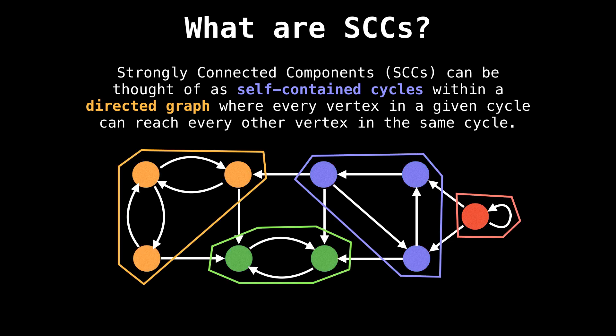I've outlined them here in different colors. If you inspect each strongly connected component, you'll notice that each has its own self-contained cycle, and that for each component, there's no way to find a path that leaves a component and comes back. Because of that property, we can be sure that strongly connected components are unique within a directed graph.